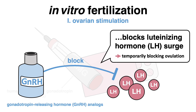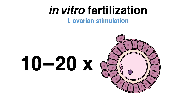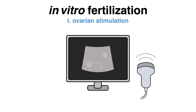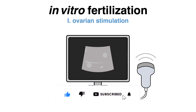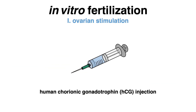The step of ovarian stimulation is done so that approximately 10 to 20 oocytes are retrieved. During that time, oocyte growth is monitored using ultrasound. When the eggs have sufficiently matured — often defined as when at least 3 follicles reach 18 mm in size — the human chorionic gonadotropin injection is administered to induce ovulation.